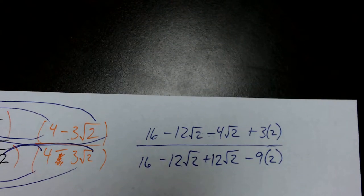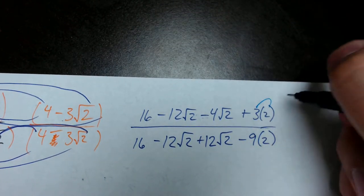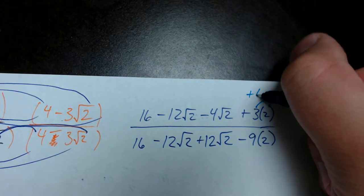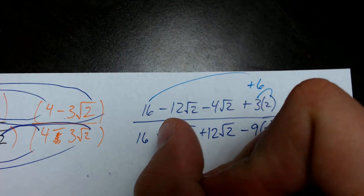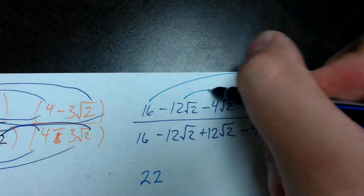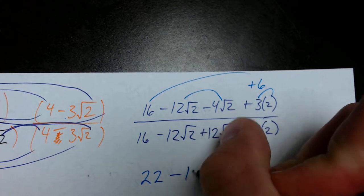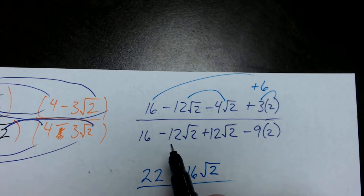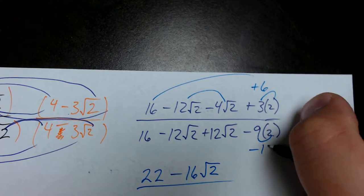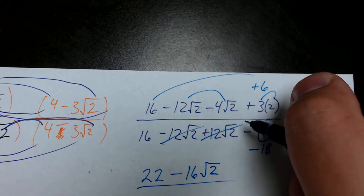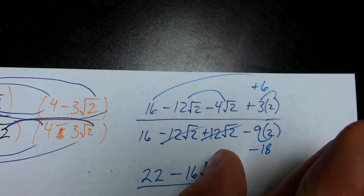Now we simplify and add like terms. In the numerator, I'll do the multiplication first: 3 times 2 becomes 6. Adding like terms: 16 plus 6 gives me 22. Then negative 12 root 2 minus 4 root 2 gives me negative 16 root 2 — that's my numerator. For the denominator, 9 times 2 becomes negative 18. Negative 12 root 2 and positive 12 root 2 cancel, leaving 16 minus 18, which gives us negative 2.